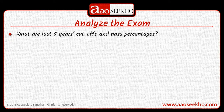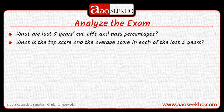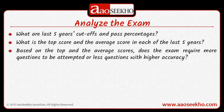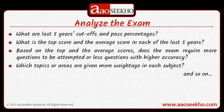What are the last 5 years' cutoffs and pass percentages? Cutoffs refer to the level below which no one is allowed to advance to the next round, and pass percentages show the percentage of people who pass out of all people who appeared for that exam. What is the top score and average score in each of the last 5 years? Based on the top and average scores, does the exam require more questions to be attempted or fewer questions but with higher accuracy? Which topics or areas are given more weightage in each subject? And so on.